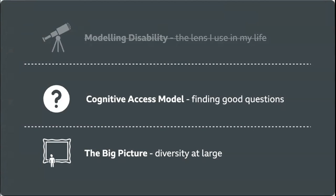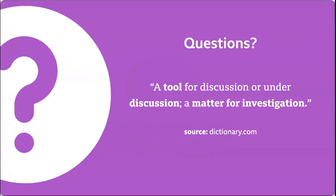So that's the lens I use for what accessibility is - where accessibility isn't about doing something for disabled people, it's ensuring that the environments we produce do not disable the people who come to them. So let's dive into the cognitive access model. I love a good question. A question is defined as a tool for discussion, a matter for investigation. Questions are the lifeblood of being an engineer. Solutions and problems are both types of questions. Today I want to talk about three of my favourite questions when thinking about cognitive accessibility.